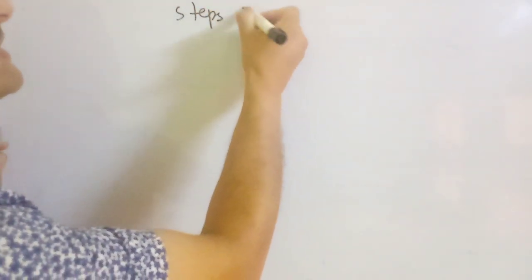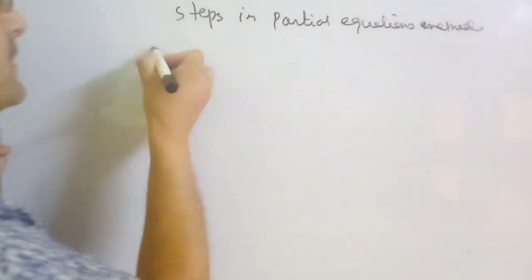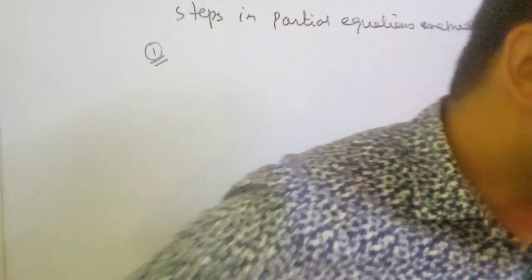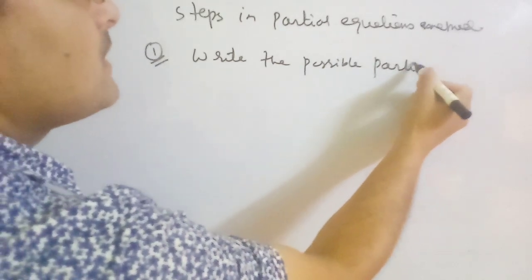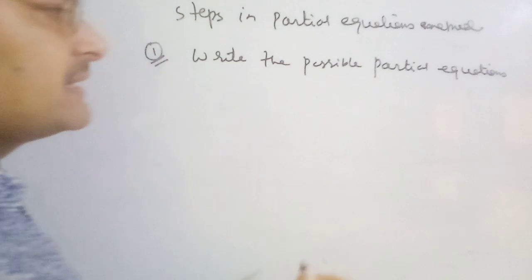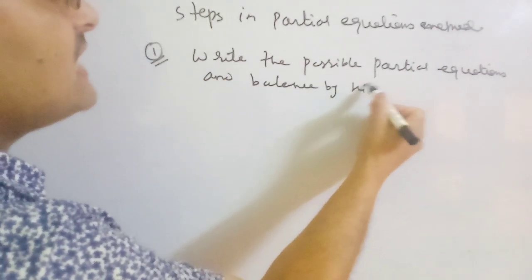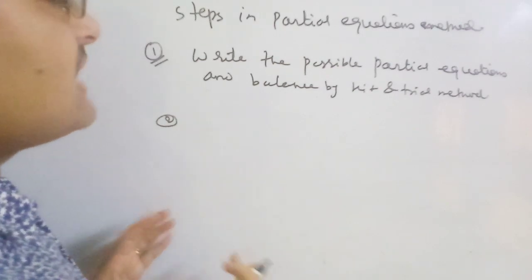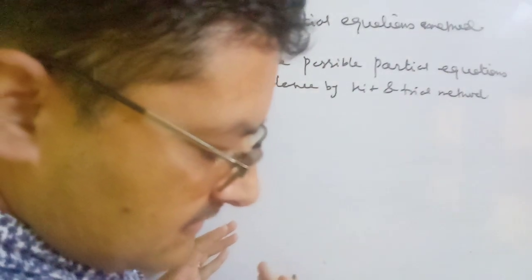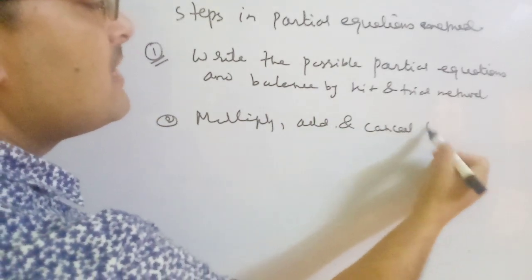So what are the steps in the partial equations method? Step one: when a reaction is given to balance by the partial equation method, write the possible partial equations — these are theoretical equations that you develop by logic — and balance them by the hit and trial method. Step two: multiply, add, and cancel the intermediate products. Intermediate products in the partial equations must be eliminated.